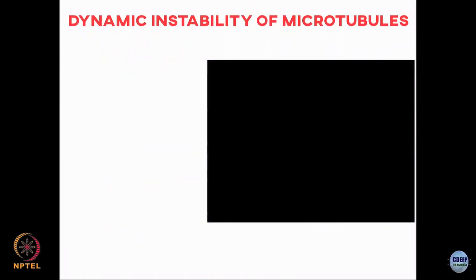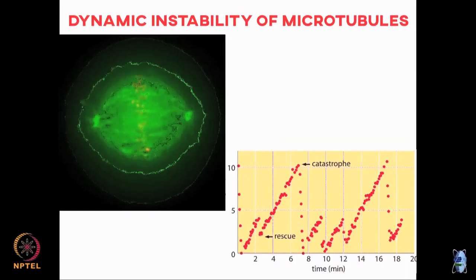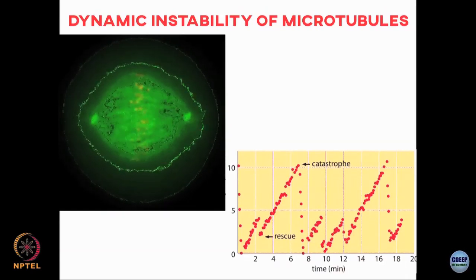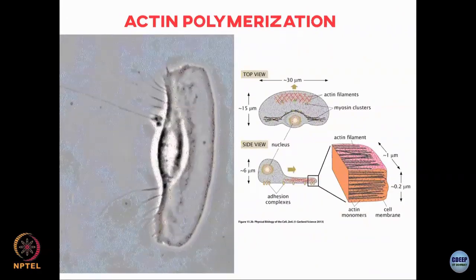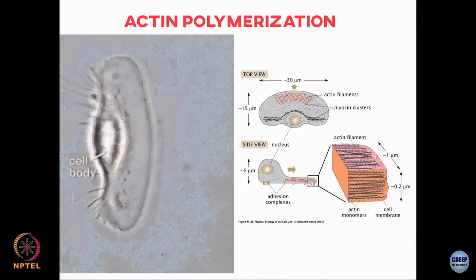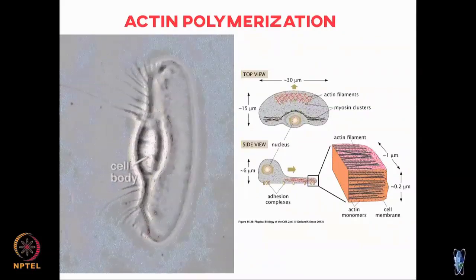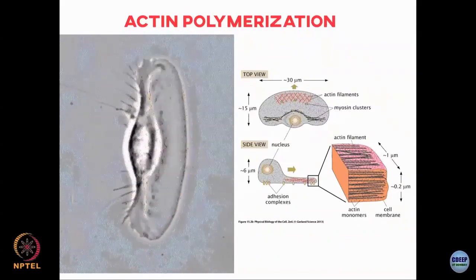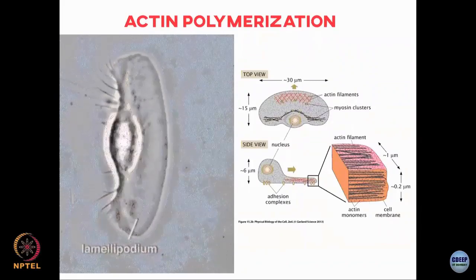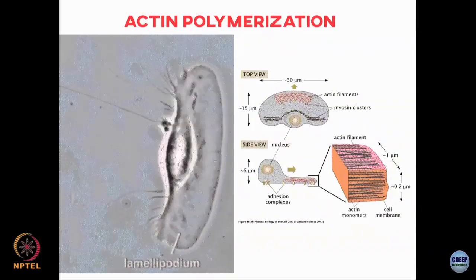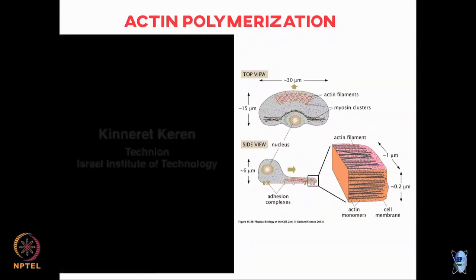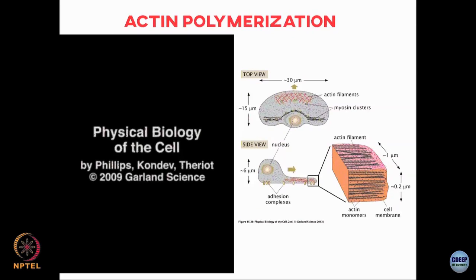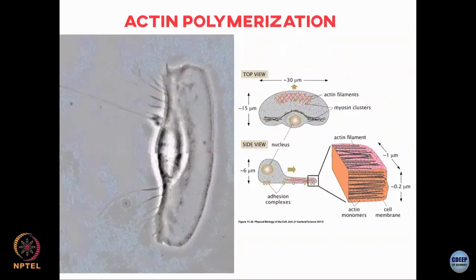These are experimental plots of microtubule length as a function of time showing catastrophe and rescue. To illustrate what effect polymerization and depolymerization have, consider a fish skin cell that is moving. In the leading edge, actin filaments and molecular motors move on these actin filaments, pushing against the cell membrane to extend it — forming what are called lamellipodia — causing the cell to crawl along the surface.